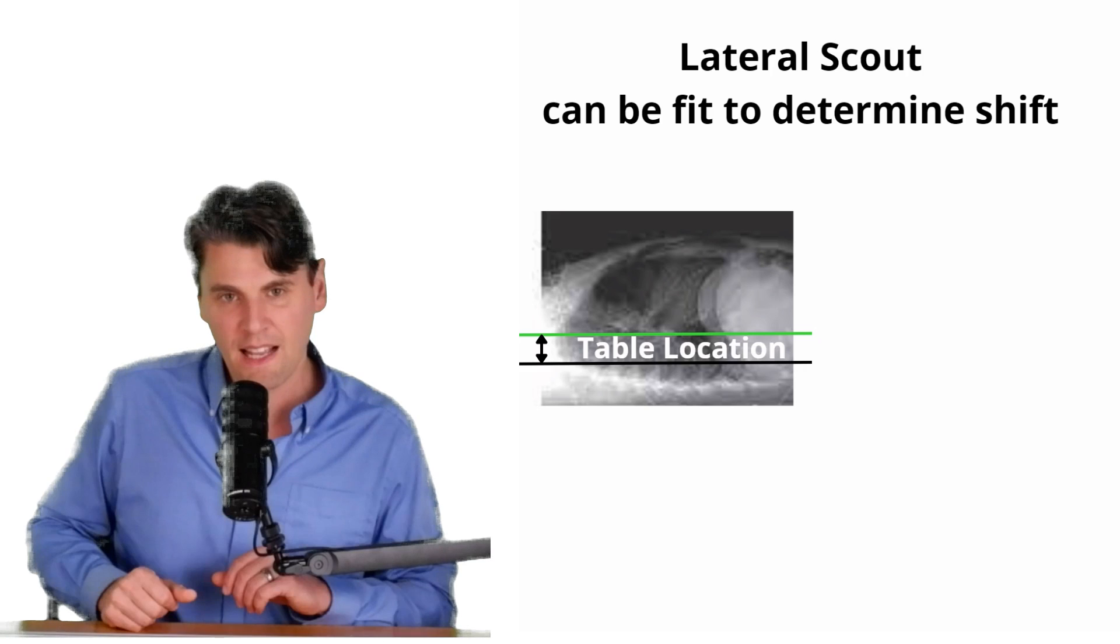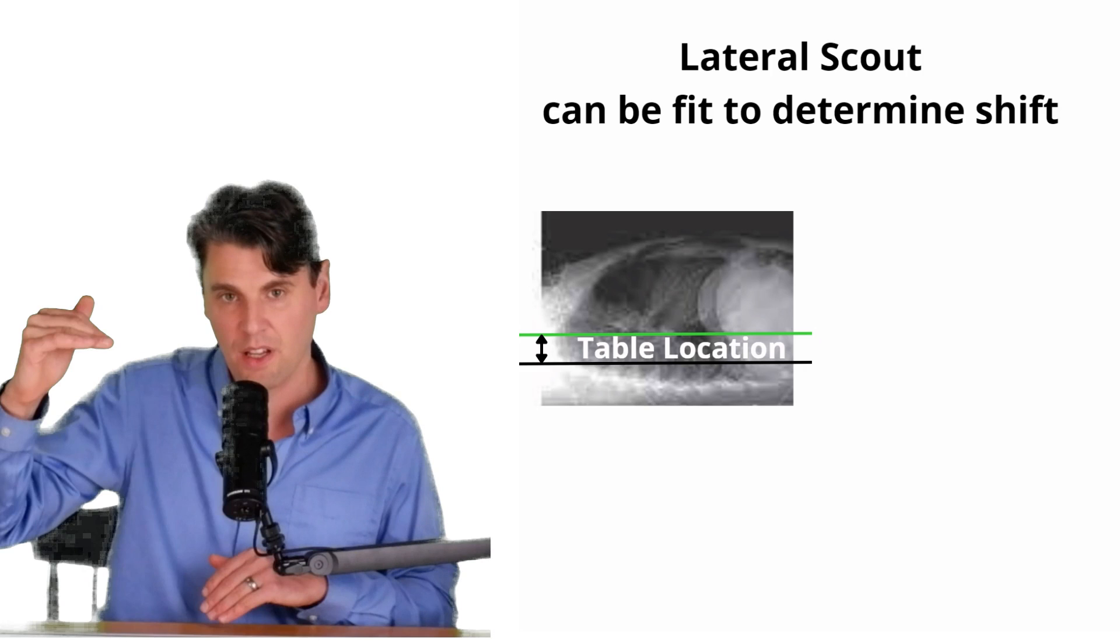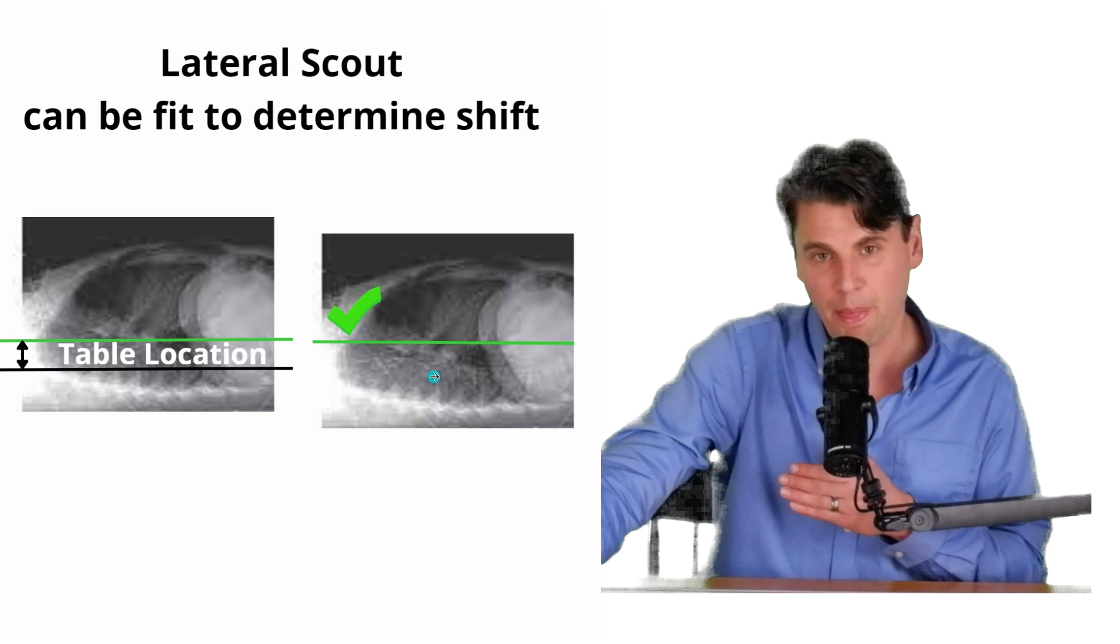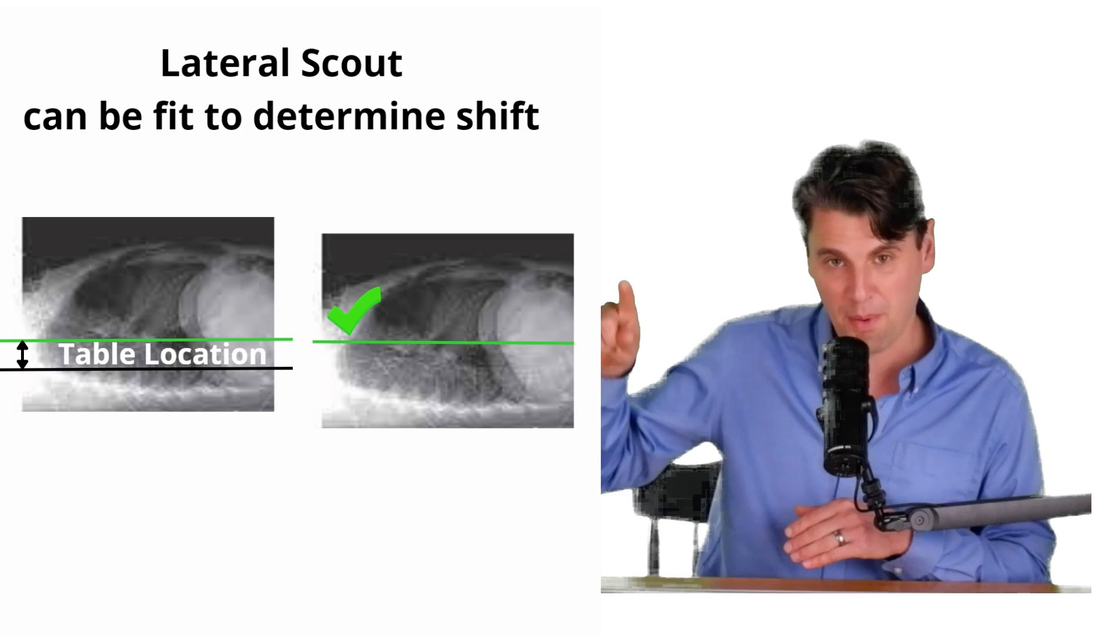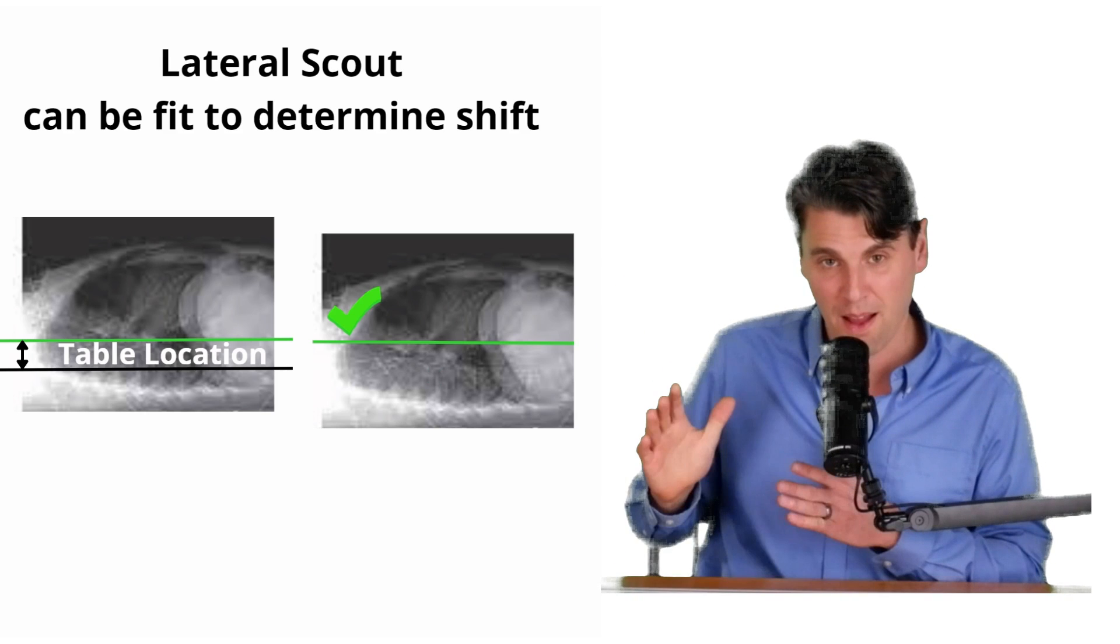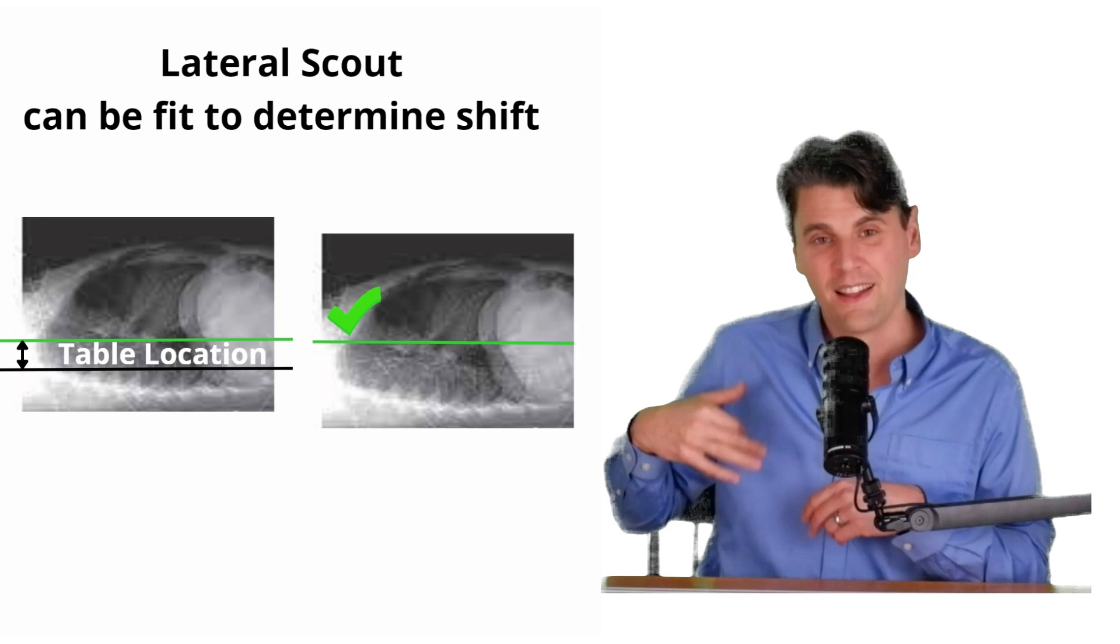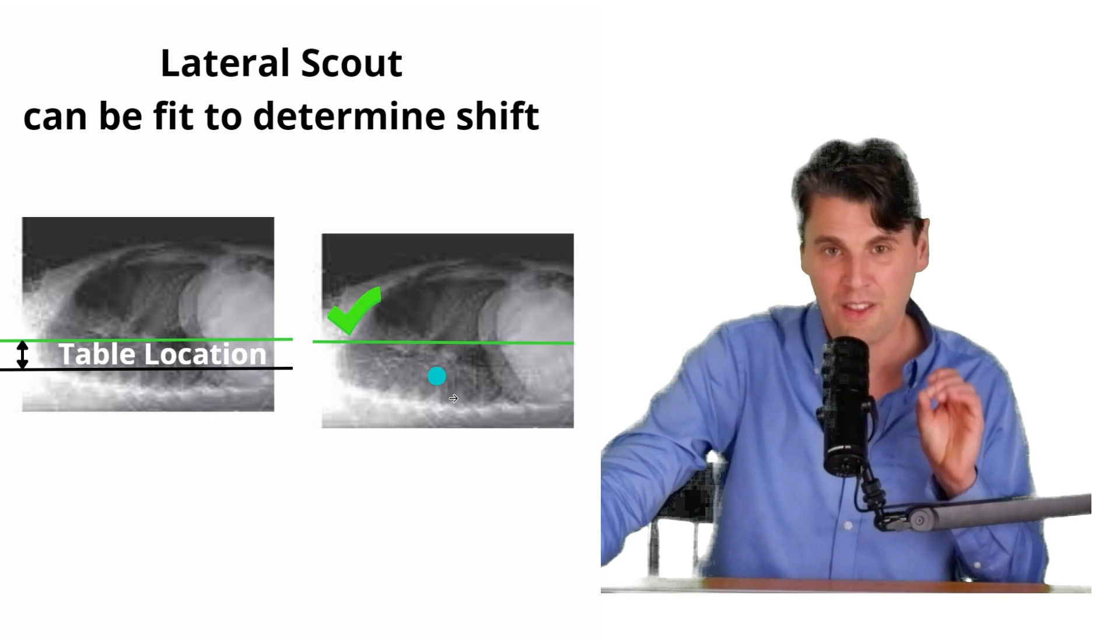Depending on how the vendor has it implemented, it could say something like go to this given table position, and you would go into the system and put that given table position. So if you have the patient relatively well positioned right away, you can get the green checkmark that says good job. Or if you do the update and get the patient well positioned, you'll get the green checkmark that says good job, you have the patient well positioned in that up down direction, you're ready to go with good patient centering.